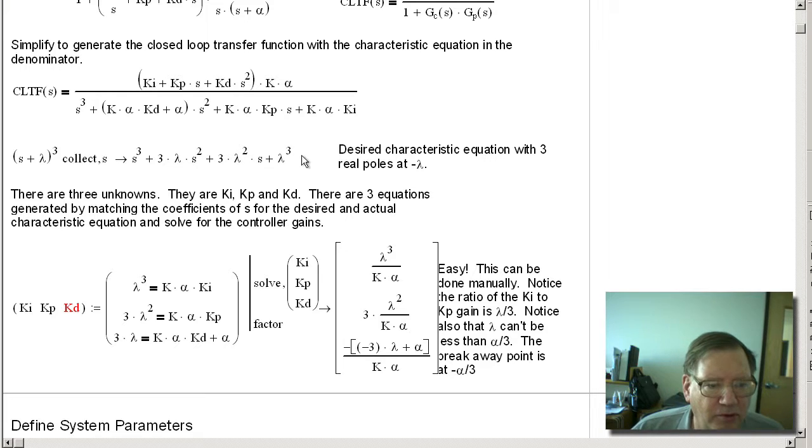So to calculate the gains, what we need to do is we have three unknowns, ki, kp, kd, and we need to have three equations. So we're going to use the coefficients for the actual characteristic equation and the desired characteristic equation to generate three equations. We're going to do that by matching the coefficients.